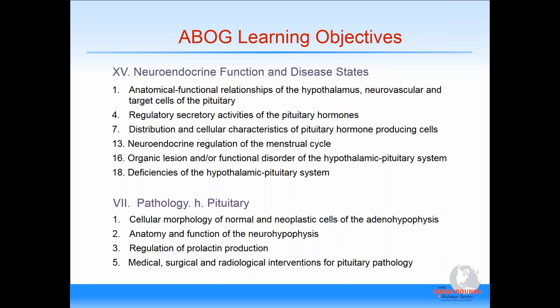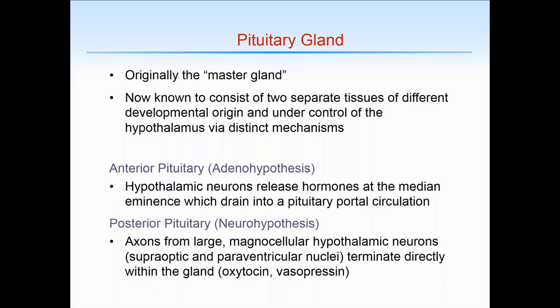The pituitary gland was originally called the master gland in that it was thought to control many physiologic functions. While it certainly has important influences throughout many organ systems, it is now known to be controlled by multiple inputs from both the hypothalamus and the periphery. The pituitary gland consists of two separate tissues of different developmental origins: the anterior pituitary gland, also known as the adenohypophysis, and the posterior pituitary gland, called the neurohypophysis.